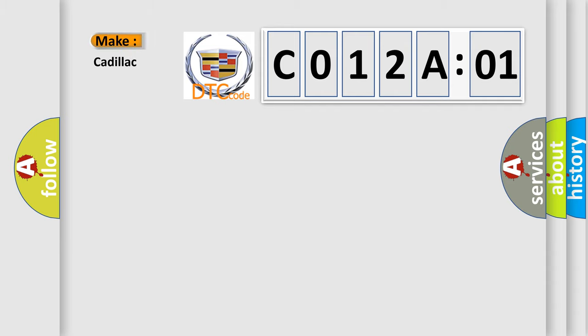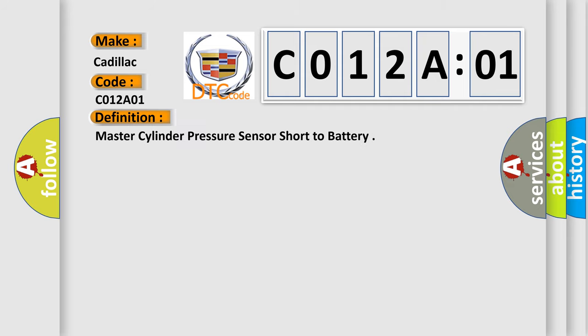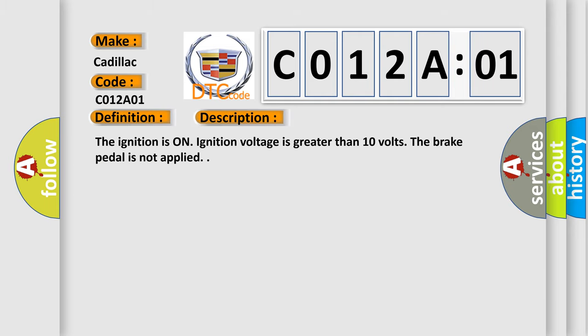So, what does the diagnostic trouble code, C012A01, interpret specifically for Cadillac car manufacturers? The basic definition is: Master cylinder pressure sensor short to battery. And now this is a short description of this DTC code.